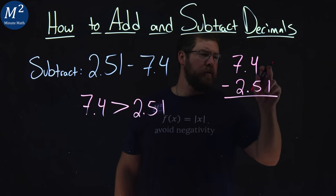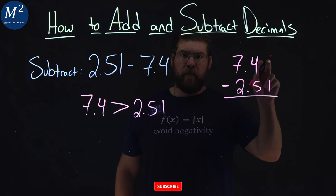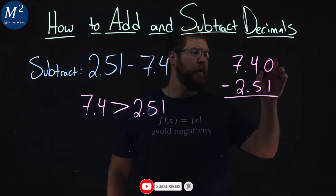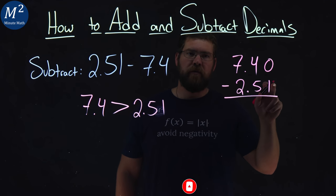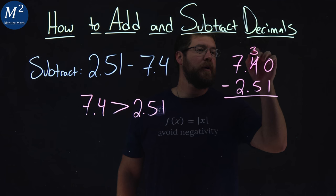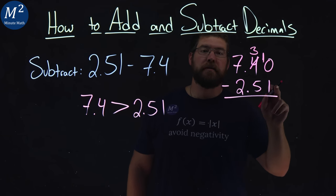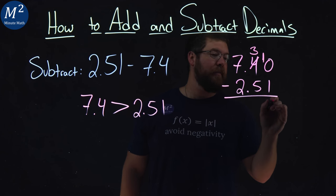Notice here there's an empty space next to 7.4. We're going to add a 0 there. From there, 0 minus 1, can't do that. Let's borrow from this 4. 4 becomes a 3. Make it a 10 to the right. 10 minus 1, that's easy, that's going to be a 9.